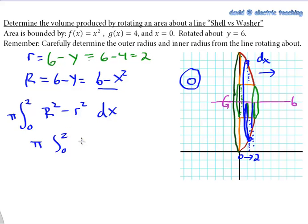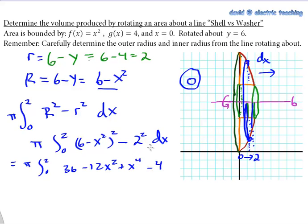So the big radius is 6 minus x-squared. And we are going to square it. And then minus the little radius squared dx. Let's clean this up. So pi integral 0 to 2. Quickly multiply this out. That's 36 minus 12x-squared plus x-to-the-fourth minus the 4. That's from right there. Collecting like terms. We've got integral 0 to 2 with the pi on the outside. 32 minus 12x-squared plus x-to-the-fourth dx.